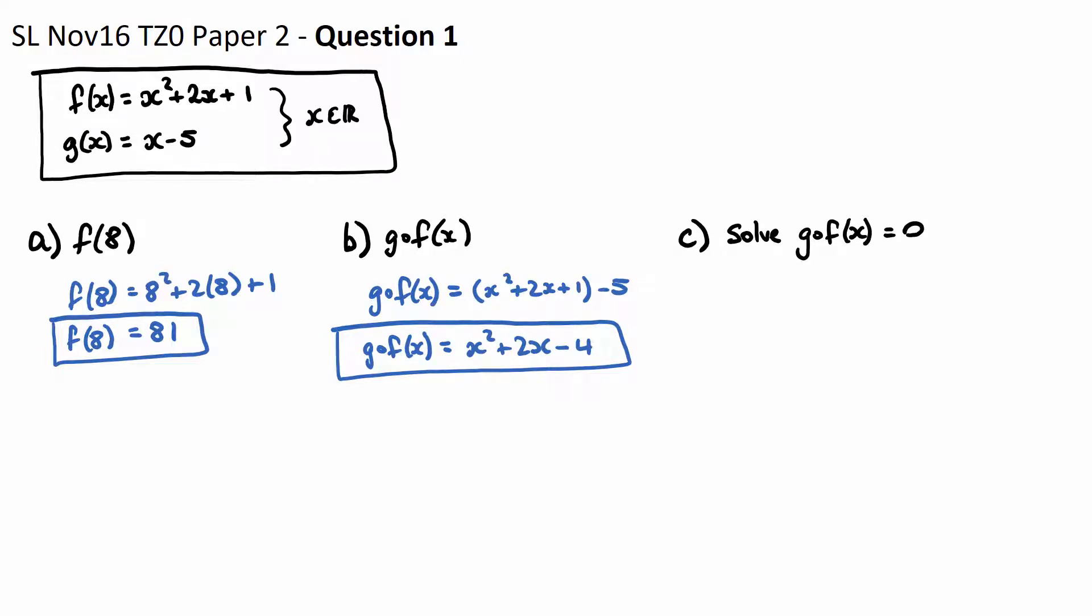Part C. Solve g(f(x)) = 0. So we know what g(f(x)) is from Part B. This quadratic down here is going to be x² + 2x - 4, and when does that equal 0?